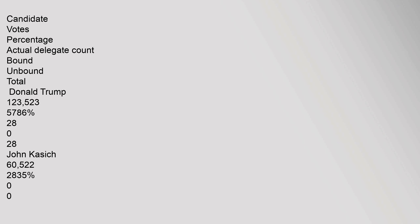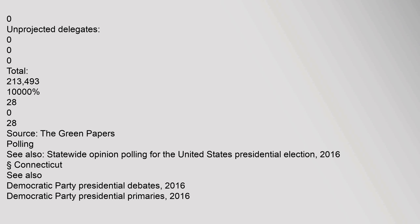2016 Republican primary results: Donald Trump received 123,523 votes (57.86%), winning 28 delegates. John Kasich received 60,522 votes (28.35%), with 0 delegates. Ted Cruz received 24,987 votes (11.70%), with 0 delegates. Uncommitted received 2,728 votes (1.28%). Ben Carson (withdrawn) received 1,733 votes (0.81%). Total: 213,493 votes (100%), 28 total delegates. Source: The Green Papers.